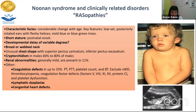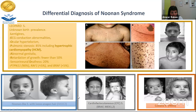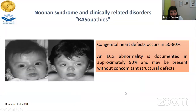An interesting aspect for surgeons is coagulation defects, which can occur in up to 33% of Noonan syndrome patients — this is one of our pre-operative screenings. The differential diagnosis includes Leopard syndrome, CFC mutations, BRAF2 or Costello syndrome. The congenital heart defects in this condition are seen in more than 50%, and ECG abnormality can be documented in up to 90% if read by someone experienced.